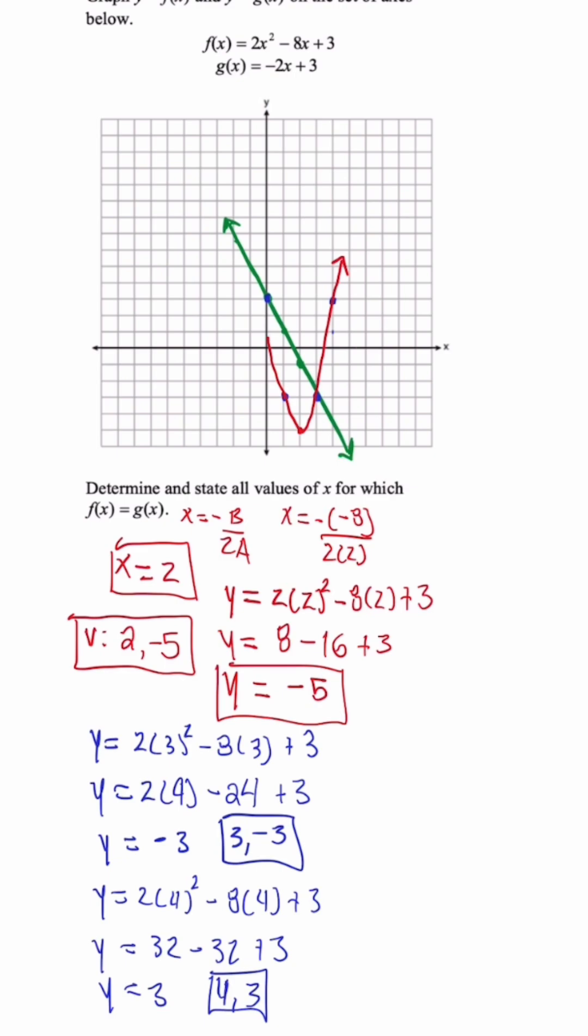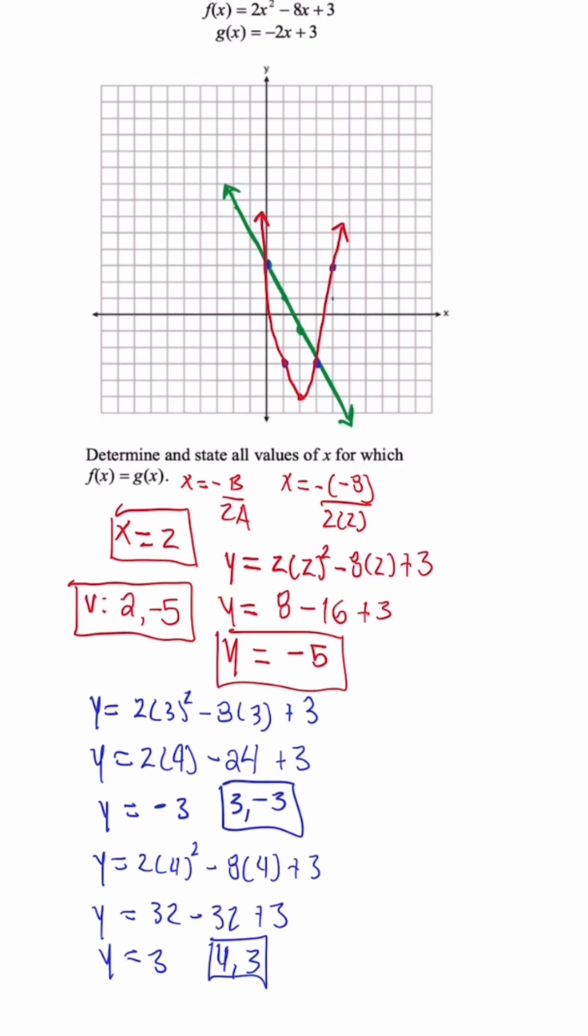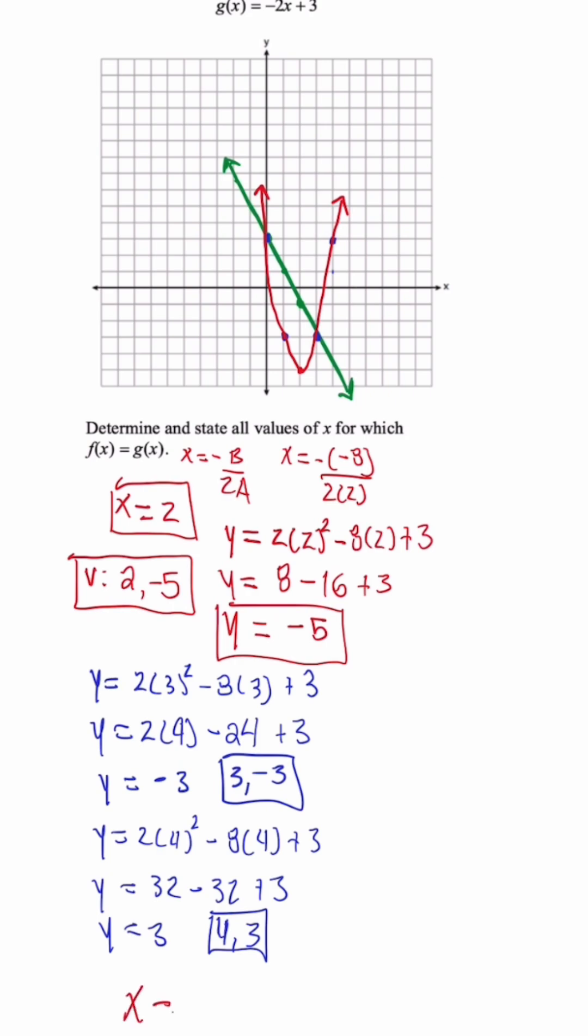We're now able to answer the question, and what they're asking us is determine the x values for where these two functions are going to be the same. And that is when x is equal to zero and when x is equal to positive 3. This is when they intersect.